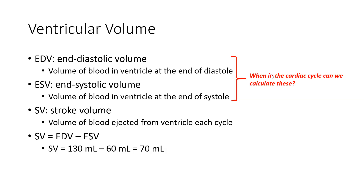In terms of when we record these two volumes — end diastolic and end systolic — end diastolic volume is recorded at the end of phase one. At the end of phase one, the AV valves have closed and the semilunar valves have also closed. The filling phase has ended, and that's when we capture the end diastolic volume.